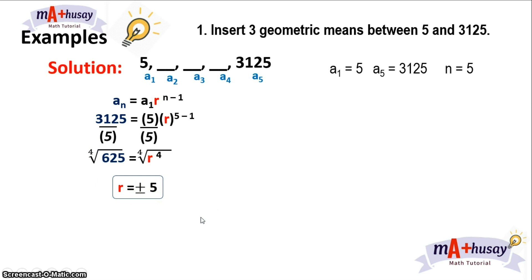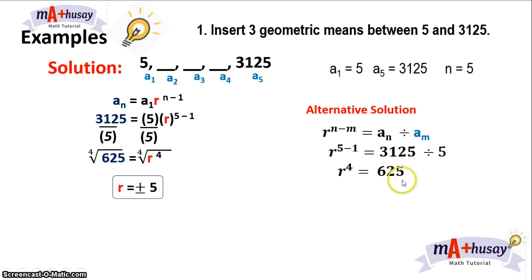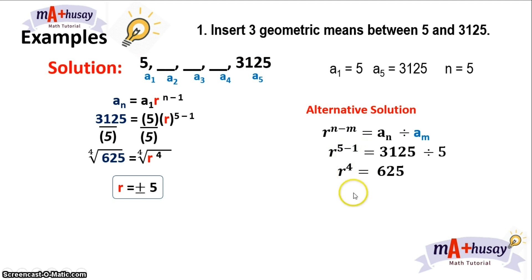Here is an alternative solution on how to get the common ratio. You can just divide 3,125 by 5 right away to get 625. The exponent of the common ratio comes from subtracting the position of the terms: 5 minus 1 is 4. So, getting the fourth root of both sides, r is positive or negative 5.